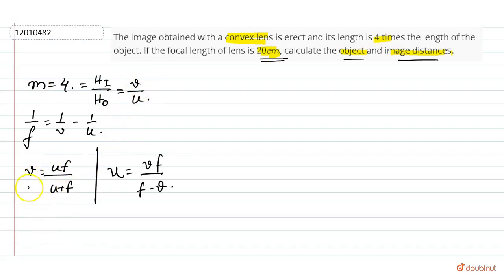In this case, we have u in denominator, so this will become magnification is equal to f upon u plus f. And in this case, we have v, so 1 upon m is equal to f upon f minus v.